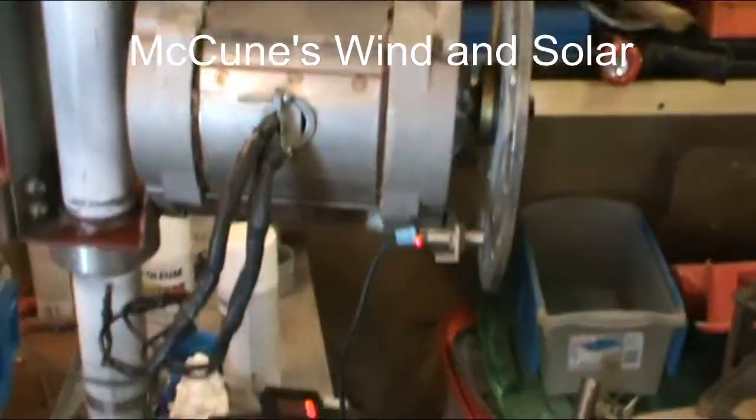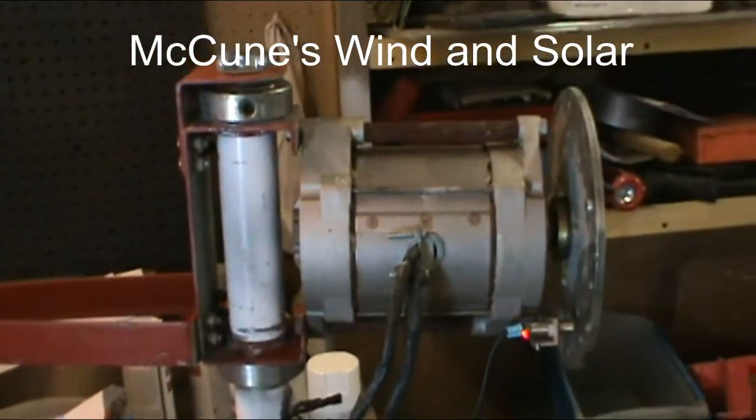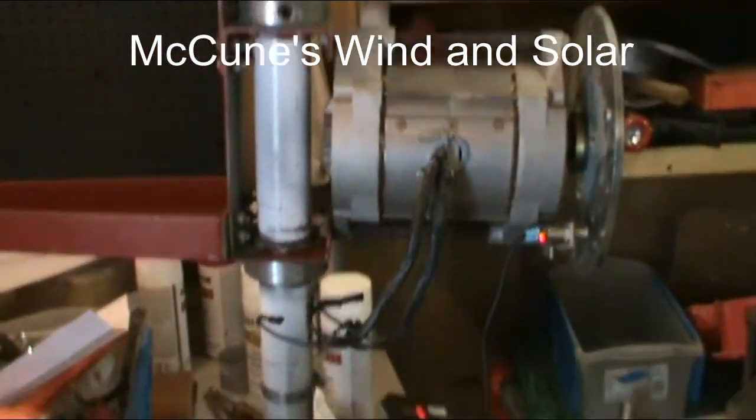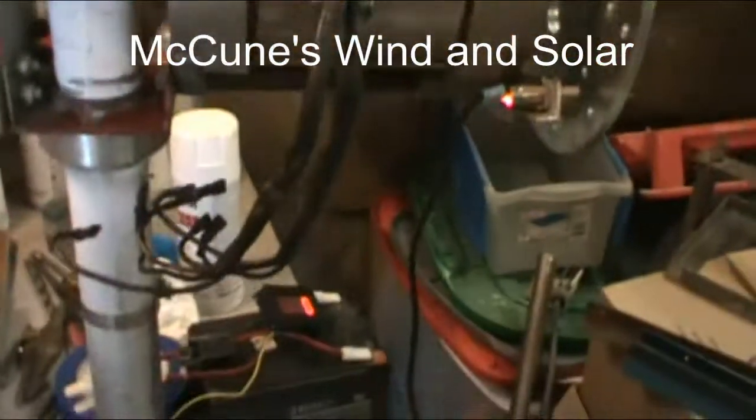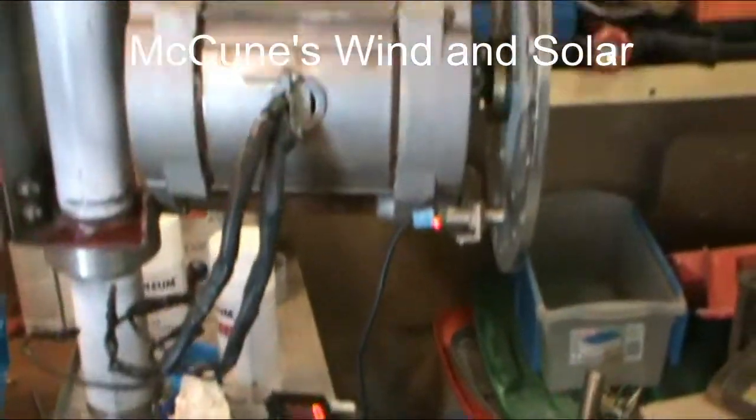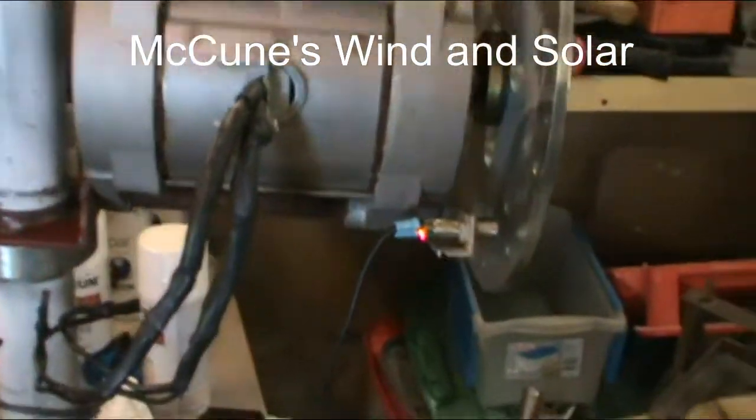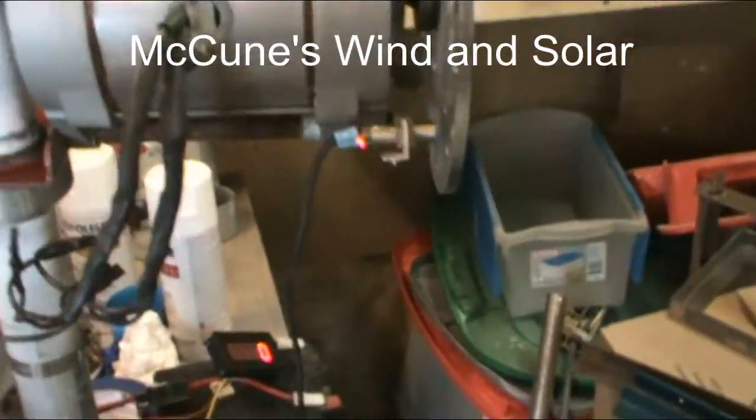As you can tell right here, I've got the regular Renegade Dual Core PMA, and I've got the PMG right now on the pole. We're going to show you exactly what we're going to be doing with the RPM gauge and how it's going to be hooked up to my wind turbine upstairs.